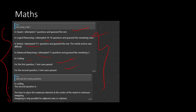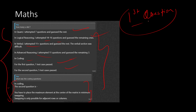For the second coding question, you have to place the maximum element at the center of the matrix in minimum swapping — swapping is only possible for adjacent rows and columns. If you have any idea what the first coding question was, please tell me in the comment section, because I asked two or three candidates but they could not explain the question properly.